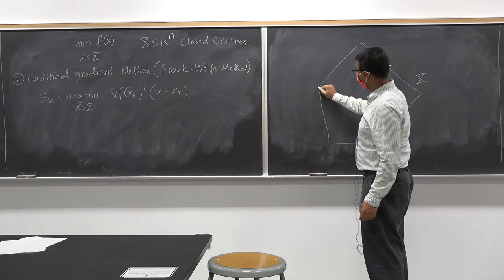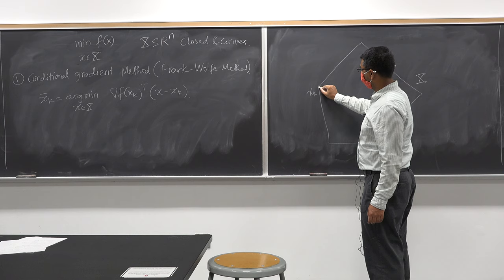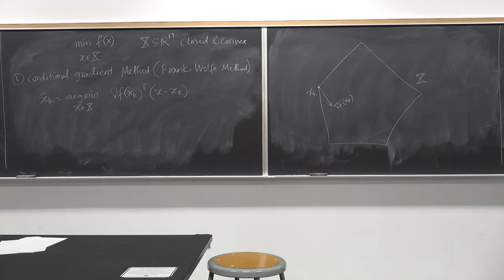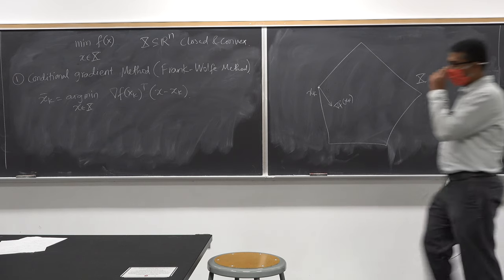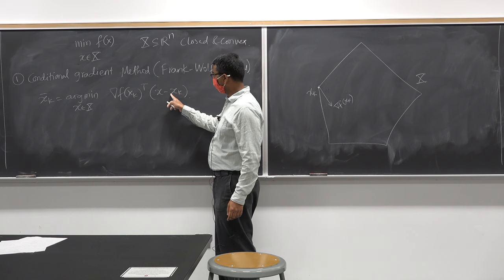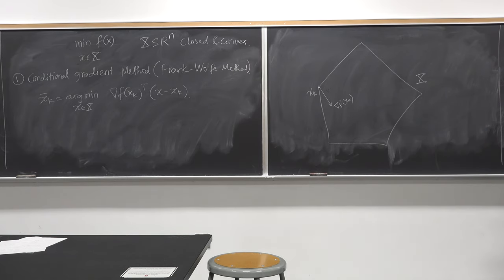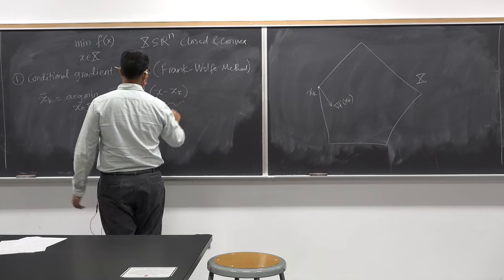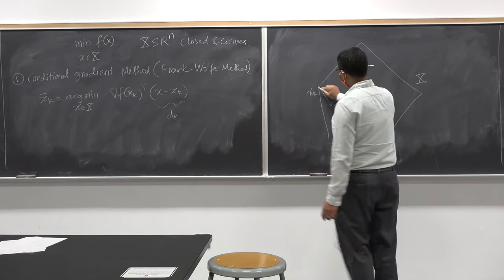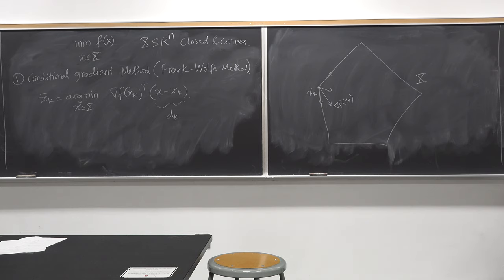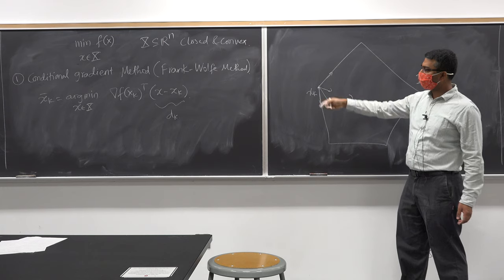So I'm standing at x_k, and I'm looking at the gradient of f(x_k). I have to pick a direction x minus x_k so that this inner product is minimized — the inner product between the gradient and (x minus x_k) is minimized. By looking at this figure, where do you think I should descend? I have so many feasible directions, and this is my d_k. I have to go in a direction where gradient transpose times (x minus x_k), or d_k, is minimized.